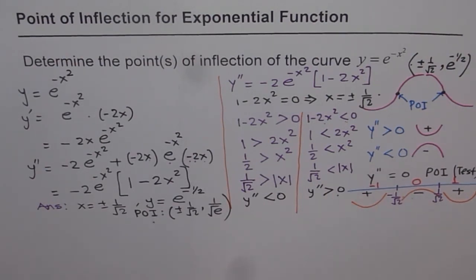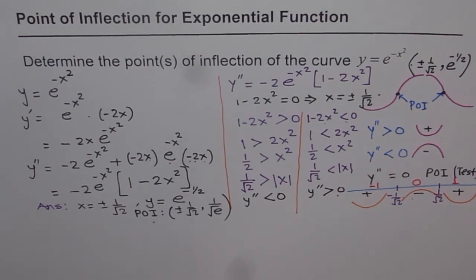Both approaches are valid, though the test-point method is often faster. I hope you found this solution interesting. In the next problem — a related one — we will use this information to find the maximum area under the curve for a rectangle, where we will apply but not re-derive the point of inflection. Thank you, and all the best.